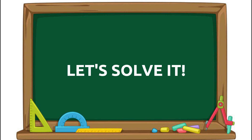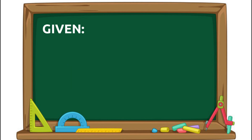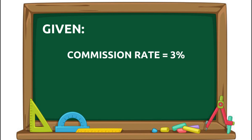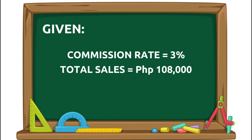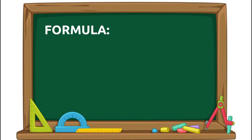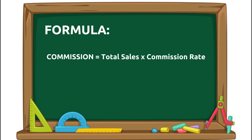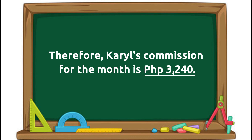Karil works on a commission-only basis and receives 3% on her monthly sales without a base salary. She sold 108,000 pesos worth of appliances. Using the formula — Commission equals sales amount multiplied by commission rate — 108,000 pesos multiplied by 3% equals 3,240 pesos. Therefore, Karil's commission for the month is 3,240 pesos.